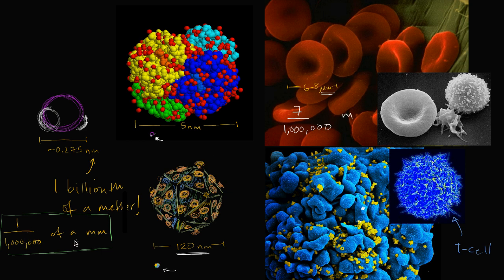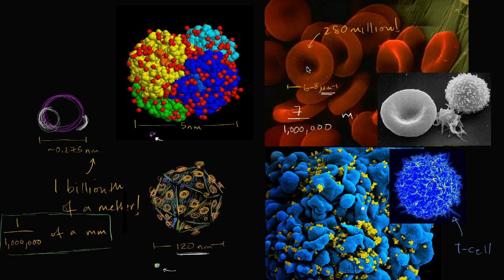Over here we were talking about a millionth of a millimeter; now we're talking about seven millionths of a meter. Each of these red blood cells is going to contain roughly 280 million hemoglobin molecules — 280 million hemoglobins in each one. So hopefully this starts to give you an appreciation that, even though we categorize cells as unimaginably small things, they're actually far larger — ginormous compared to even large proteins, and especially when you think of things on the molecular or the atomic scale.